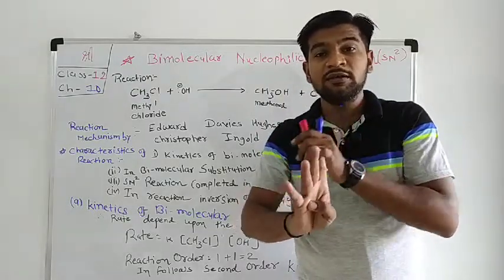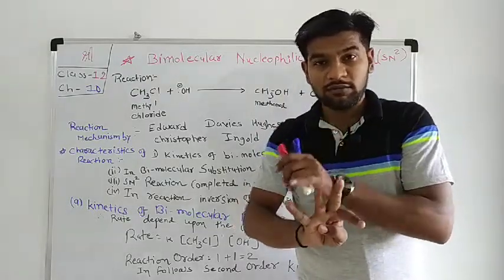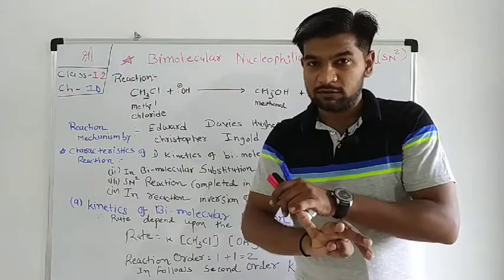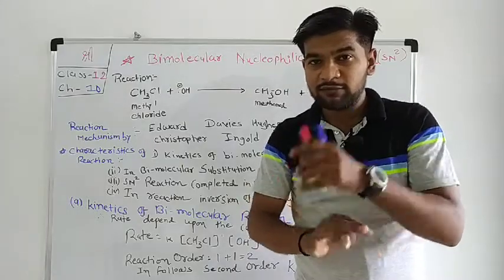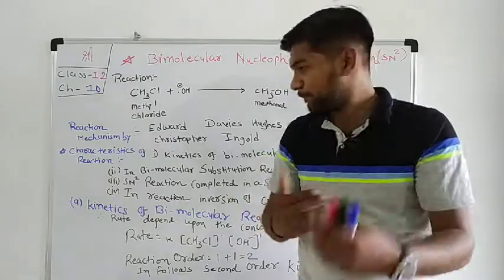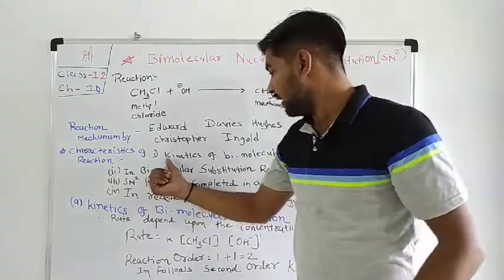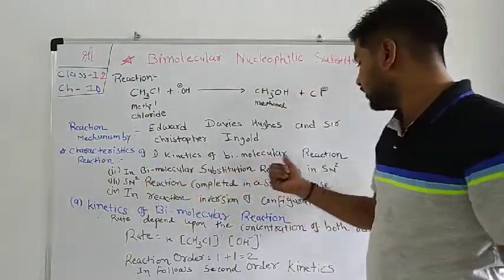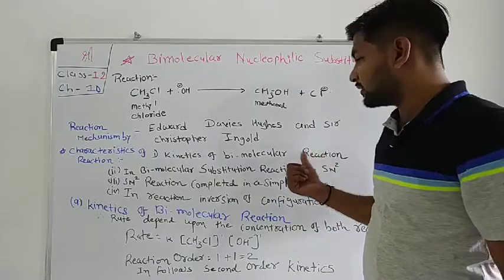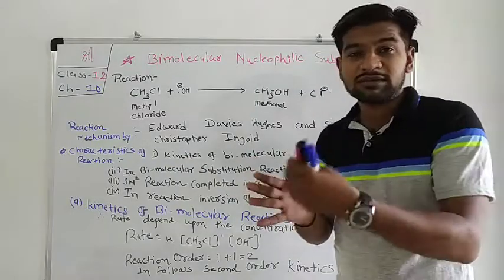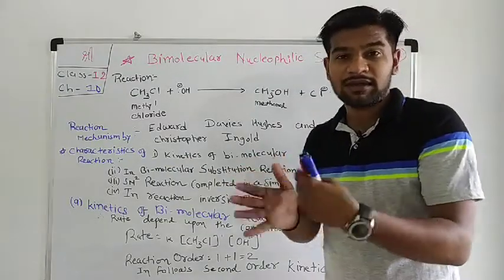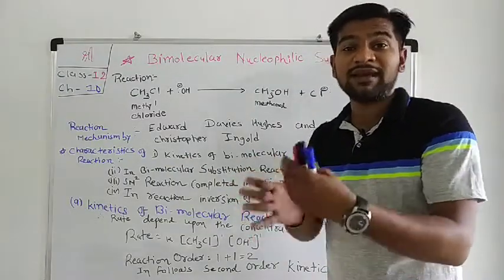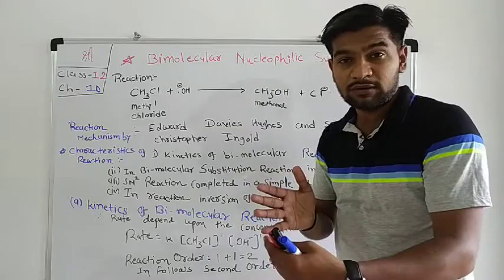We can see it one by one in four parts. The first one is the kinetics of the bimolecular reaction — that is, what is the rate? What is its chemical kinetics? What order is it — first order, second order, or third order?